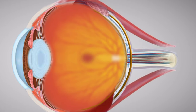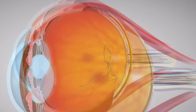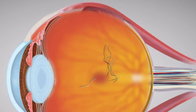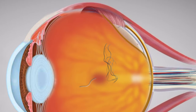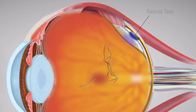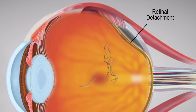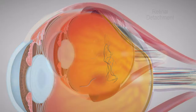PVD is very common and is generally benign, requiring no treatment. Unfortunately, in a small number of cases, as the vitreous detaches, it may pull the retina with it, causing a retinal tear. Fluid from the vitreous may then slip through the tear and cause the retina to separate from the underlying tissue. This is known as retinal detachment and may cause permanent visual loss.